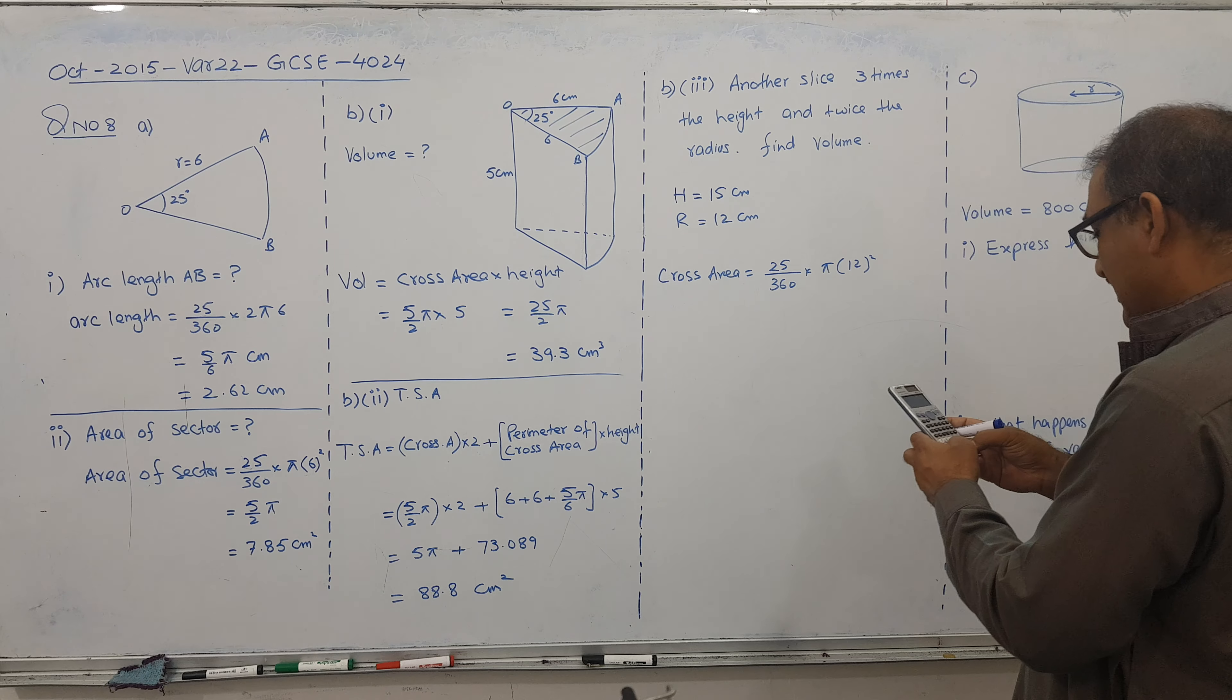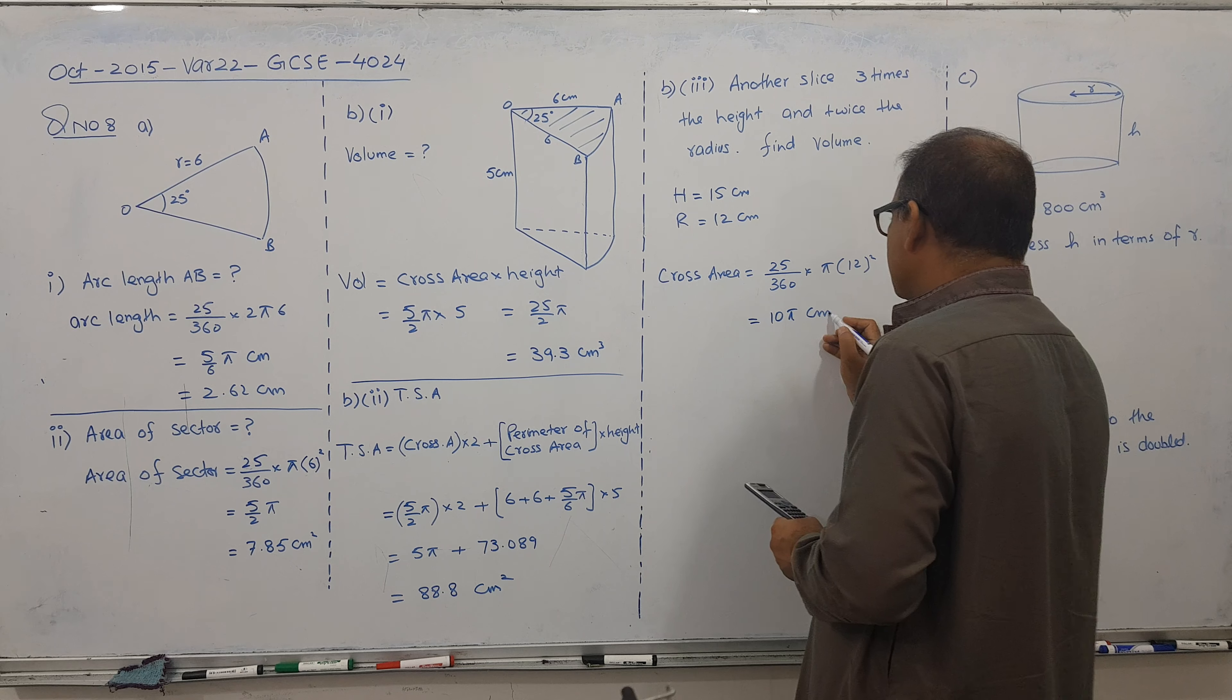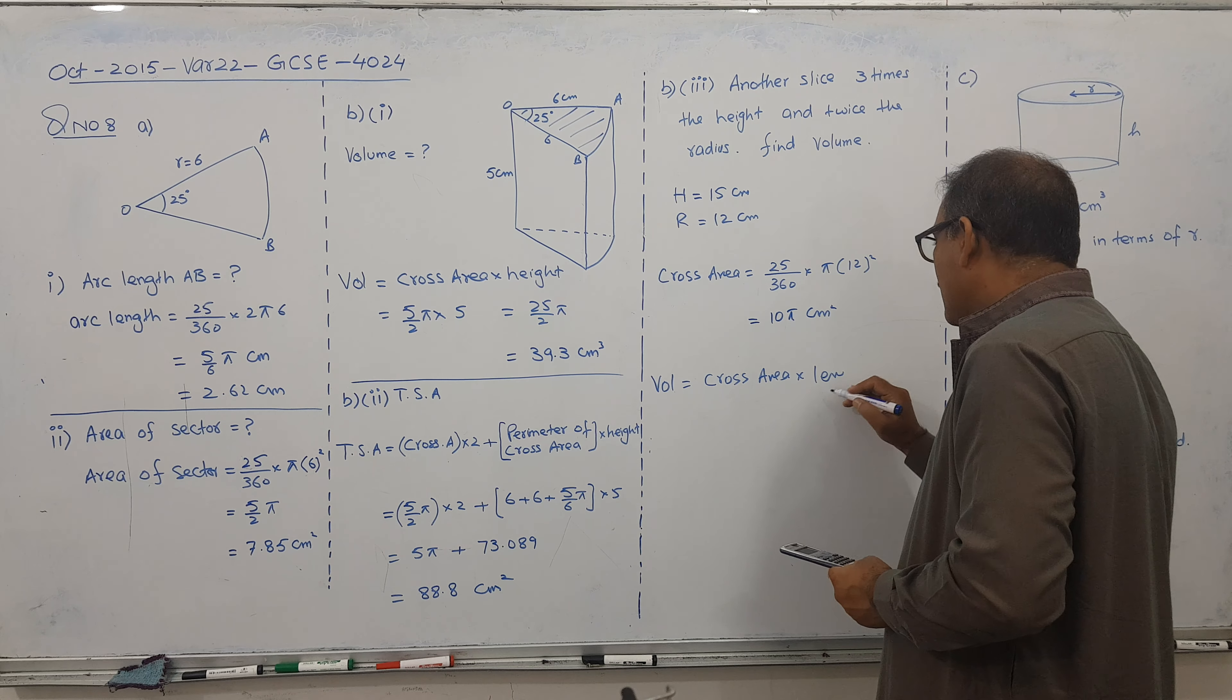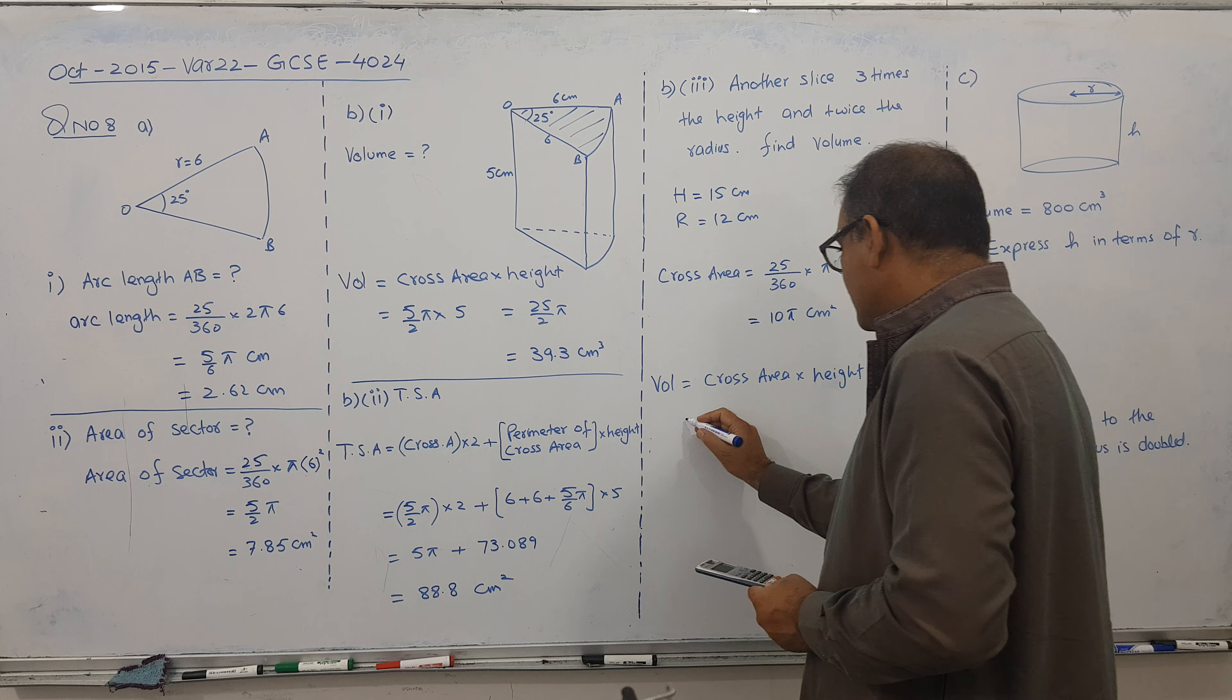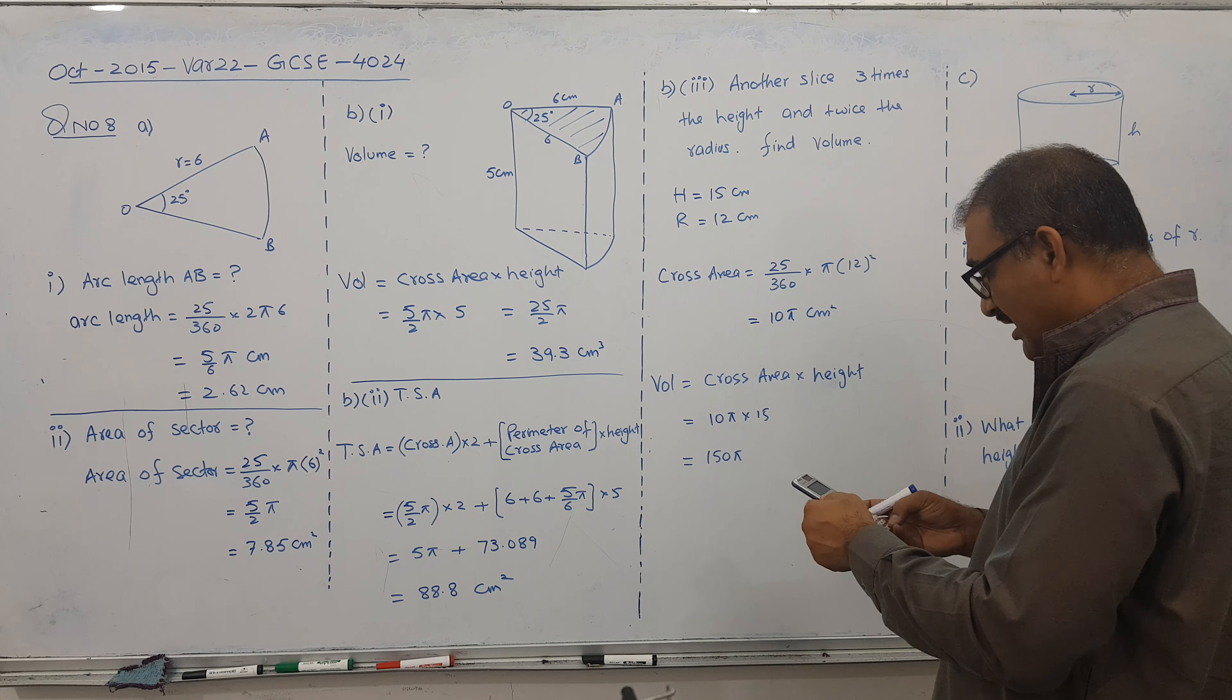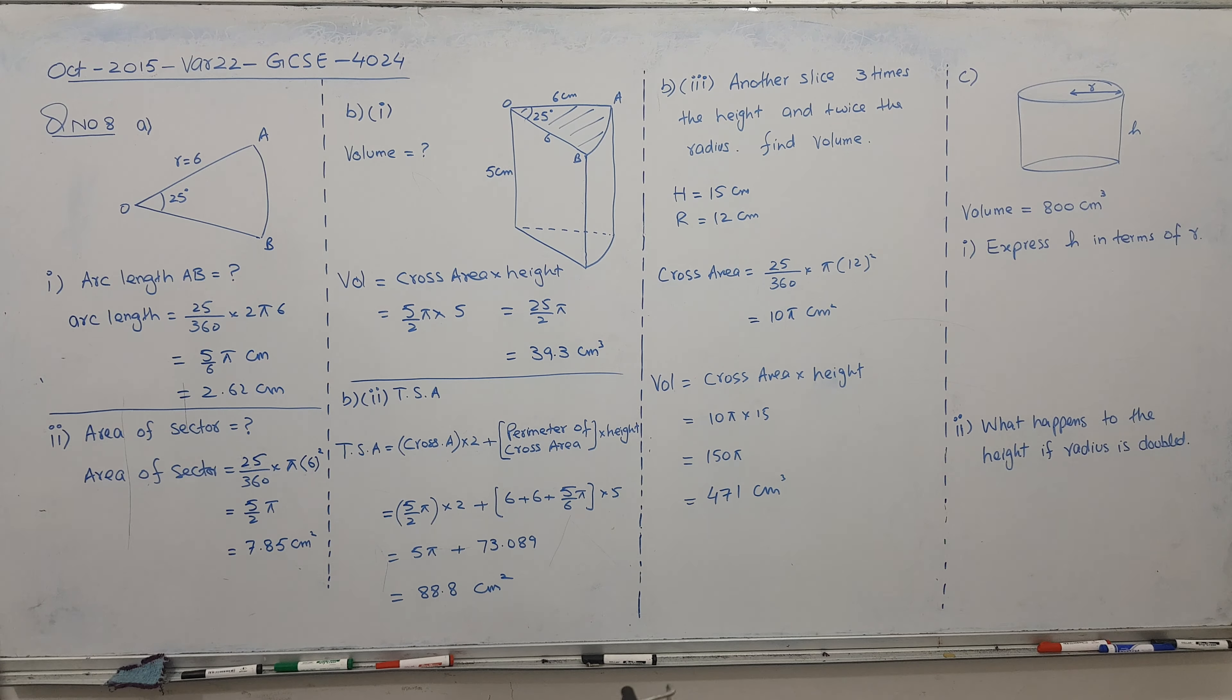And let's solve 25 by 360 times pi. And times 144. Giving us 10 pi centimeters square and volume formula you know now cross area into length or height. Cross area we know 10 pi and height is 15. So I got 150 pi and 150 pi it's coming 471.2 cm cubed. So we got a 471 answer.